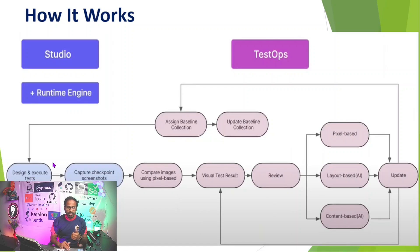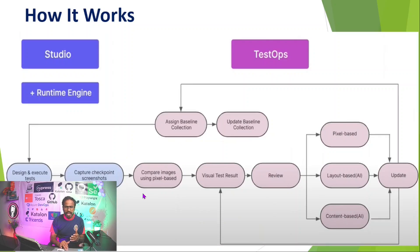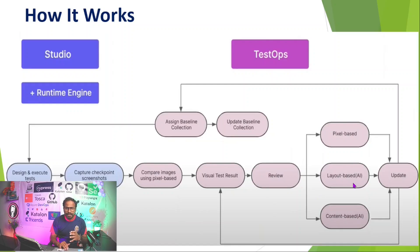So the overall workflow is: collect baseline screenshots in TestOps for each page, design test cases in Katalon Studio capturing runtime checkpoint screenshots, then compare baseline with runtime screenshots using pixel-based, layout-based, or content-based methods to determine if the baseline matches the runtime screenshots.